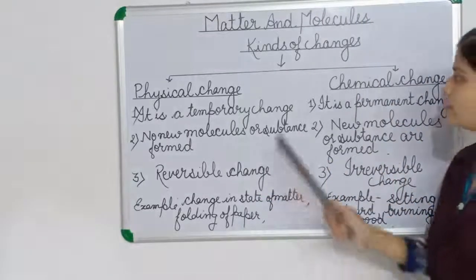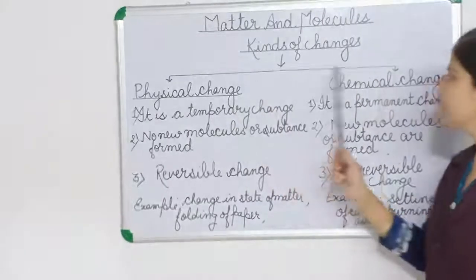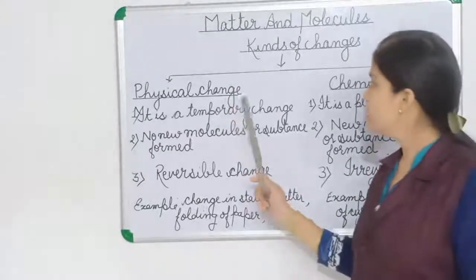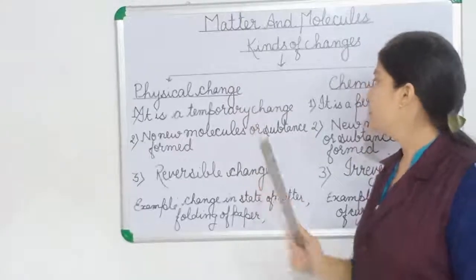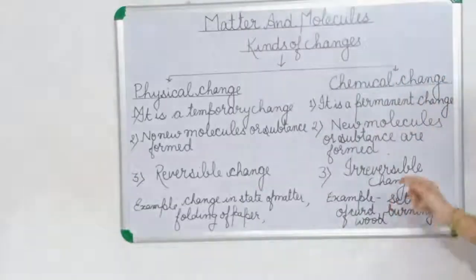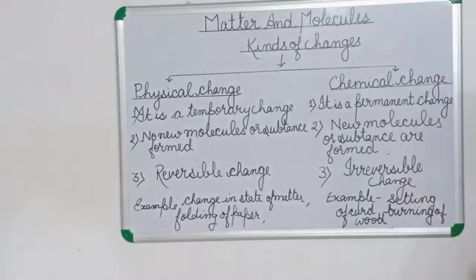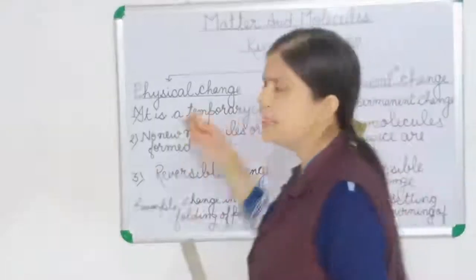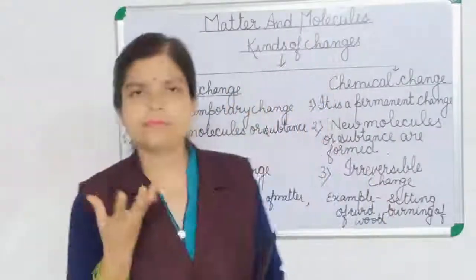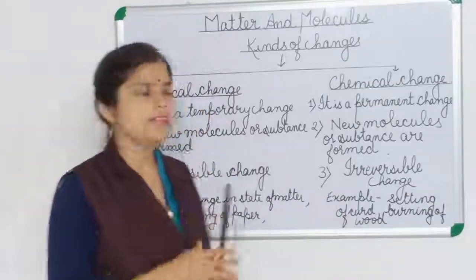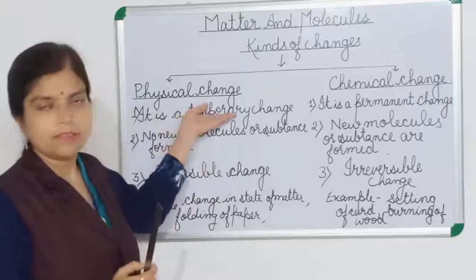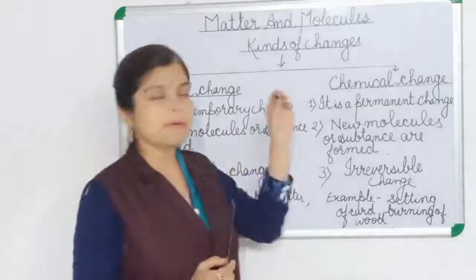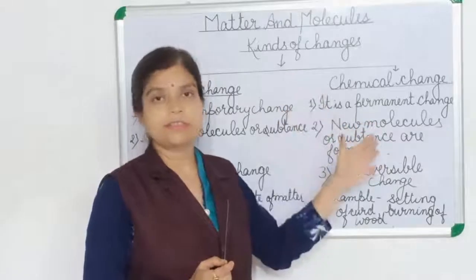What is the difference between physical change and chemical change? First of all, physical change is temporary — it can occur for some time but is not stable. But chemical change is permanent — it is a stable change.